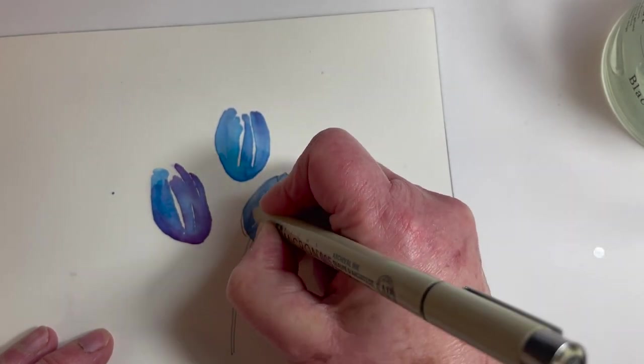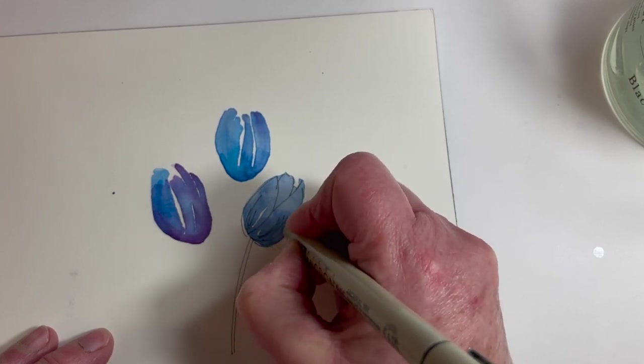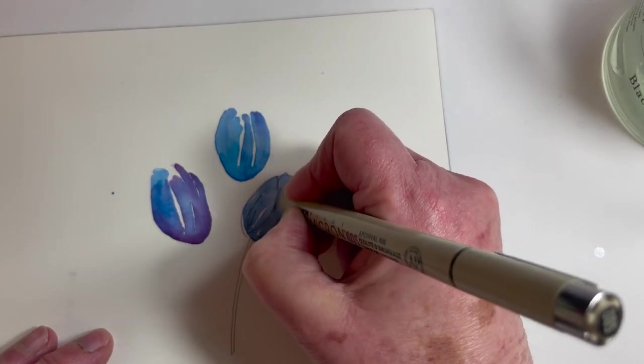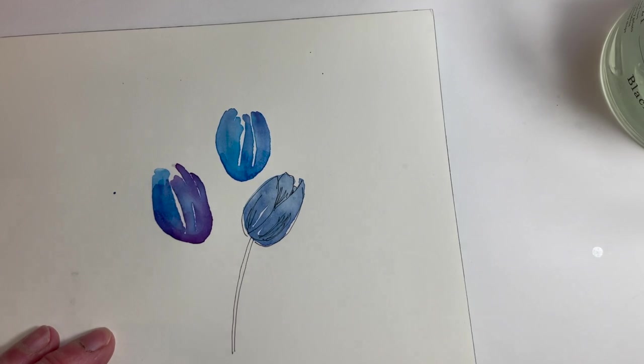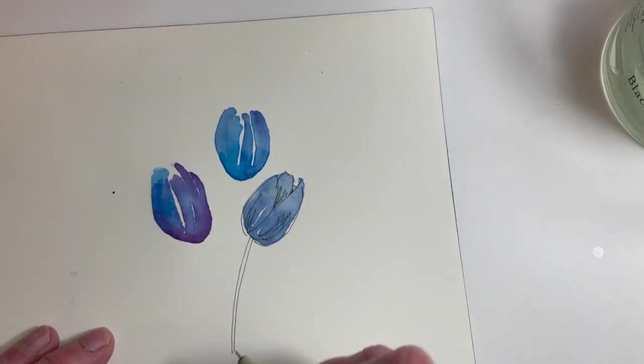And then if I go back in and even add a little extra oomph just to show the roundness of the form, and I'll darken back there. There's a tulip. Look how easy! And you see how that white space there adds a little sparkle.